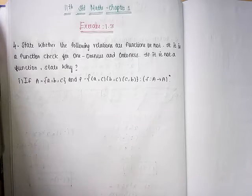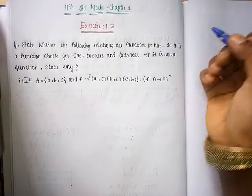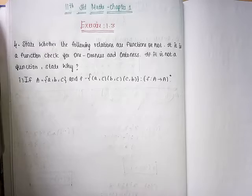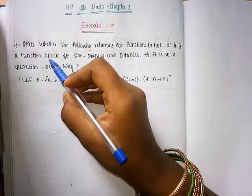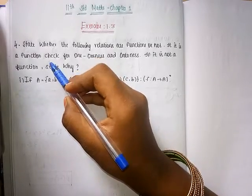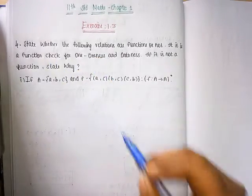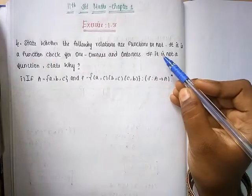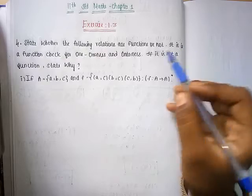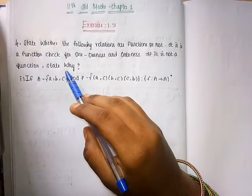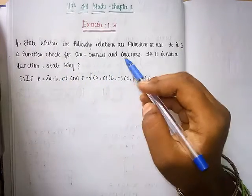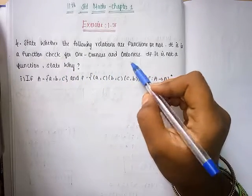Class 11 standard math, Chapter 1 - Sets, Relations and Functions, Exercise 1.3, question 4. Check whether the following relations are functions or not. If it is a function, check for one-to-one-ness and onto-ness.